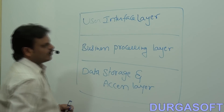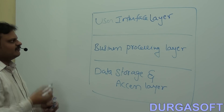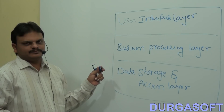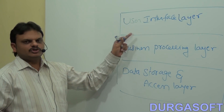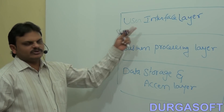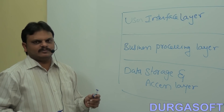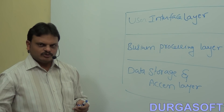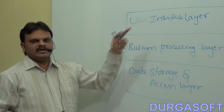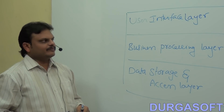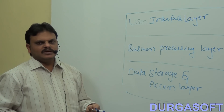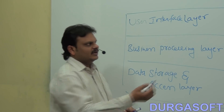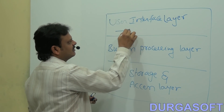The main intention of the user interface layer is to provide the presentation part for the user — it is the starting point for users to interact with our server-side application. It provides a good environment to accept data from users and submit it to the server-side application. The main intention of this layer is to improve the look and feel of enterprise applications.